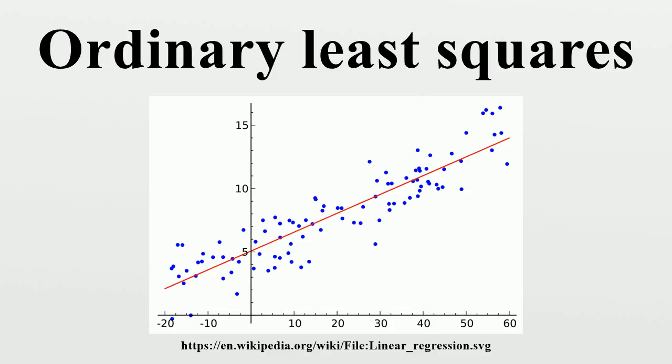Classical Linear Regression Model. The classical model focuses on the finite sample estimation and inference, meaning that the number of observations n is fixed. This contrasts with the other approaches, which study the asymptotic behavior of OLS, and in which the number of observations is allowed to grow to infinity.